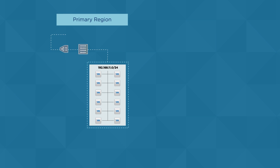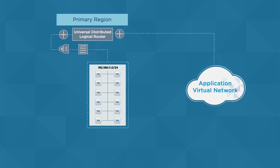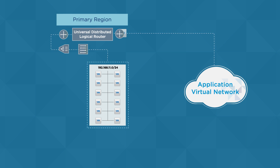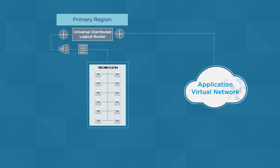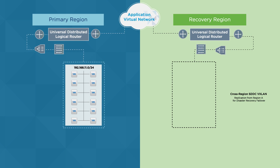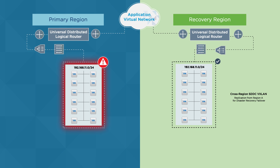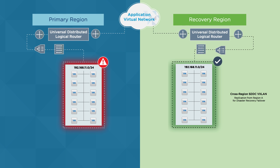To facilitate virtual machine failover between regions, the replicated virtual machines are deployed on a virtual network connected to an NSX universal distributed logical router in a construct referred to as an application virtual network. Application virtual networks eliminate the need to change IP addresses during failover to the recovery region. At the recovery region, the same distributed virtual network exists and the application runs unaltered from the primary region.